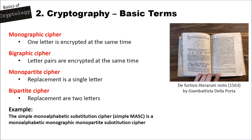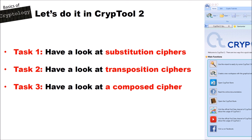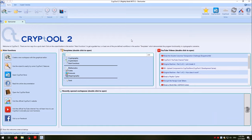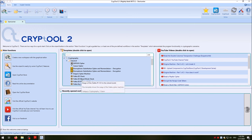So we replace one letter by two letters. The 'graphic' term refers to what we do with the plaintext, and the 'partite' term refers to what we do in the ciphertext. An example is the simple monoalphabetic substitution cipher, which is a monoalphabetic, monographic, monopartite substitution cipher. So this was everything for terminology. Now in Crypto2 we will have a look at substitution ciphers, transposition ciphers, and a short look at composed ciphers. You find the substitution ciphers by going to Cryptography and Classical.